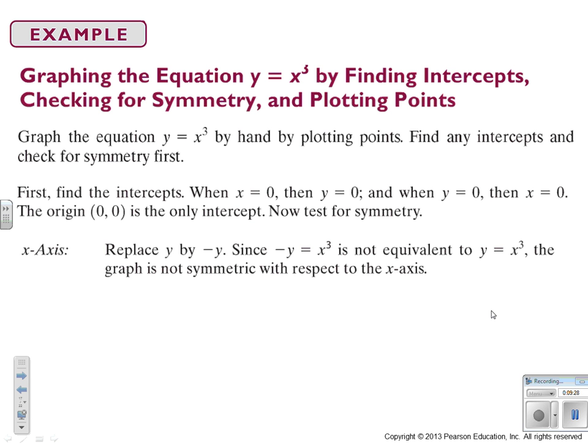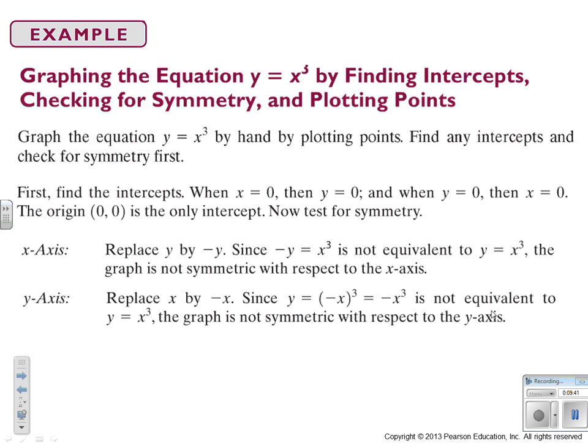Let's do our symmetry test. We'll put in negative y for y, it gives us just one more negative running around in our function, so it is not symmetrical with the x-axis. When we replace negative x with x, if I have a negative and an odd power, I get out a negative. And that changes the sign of our function, so it's not y-axis symmetry.